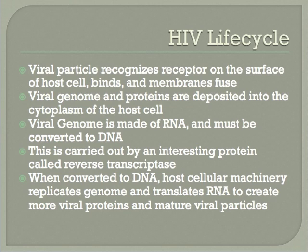The central dogma states that the flow of genetic information goes from DNA to RNA to proteins. In order to create new viral RNA and proteins, the virus must take on a seemingly impossible feat of reversing the flow from RNA to DNA. It does so through the use of a very unique protein, appropriately named reverse transcriptase.